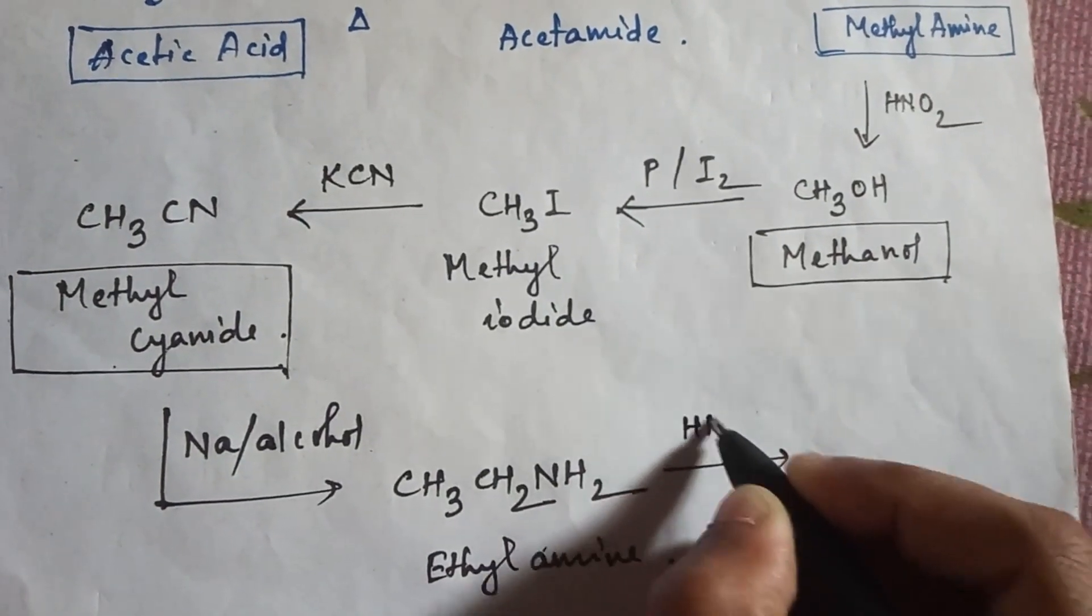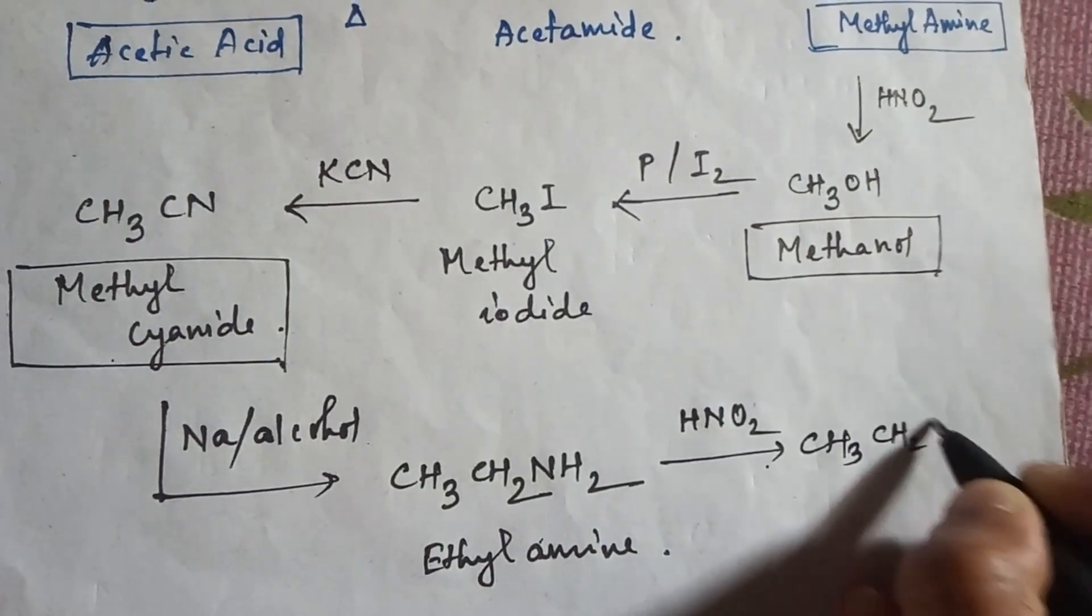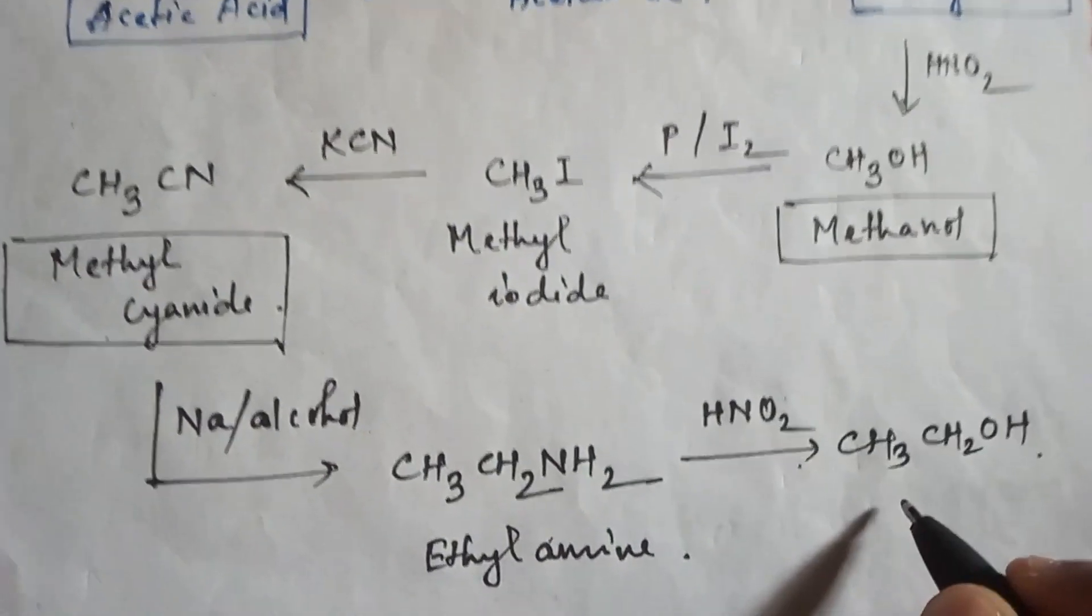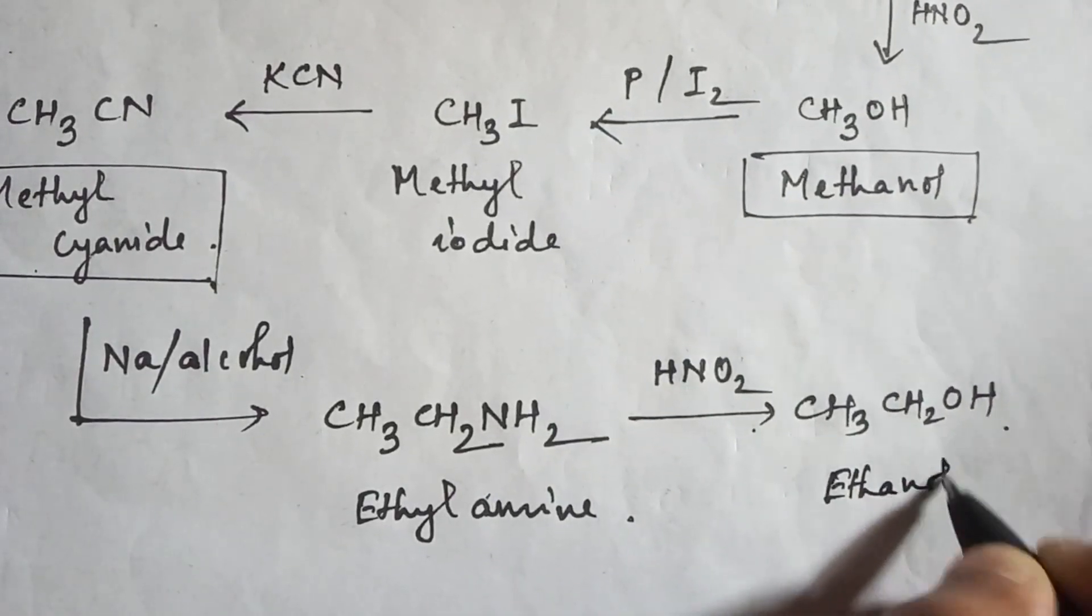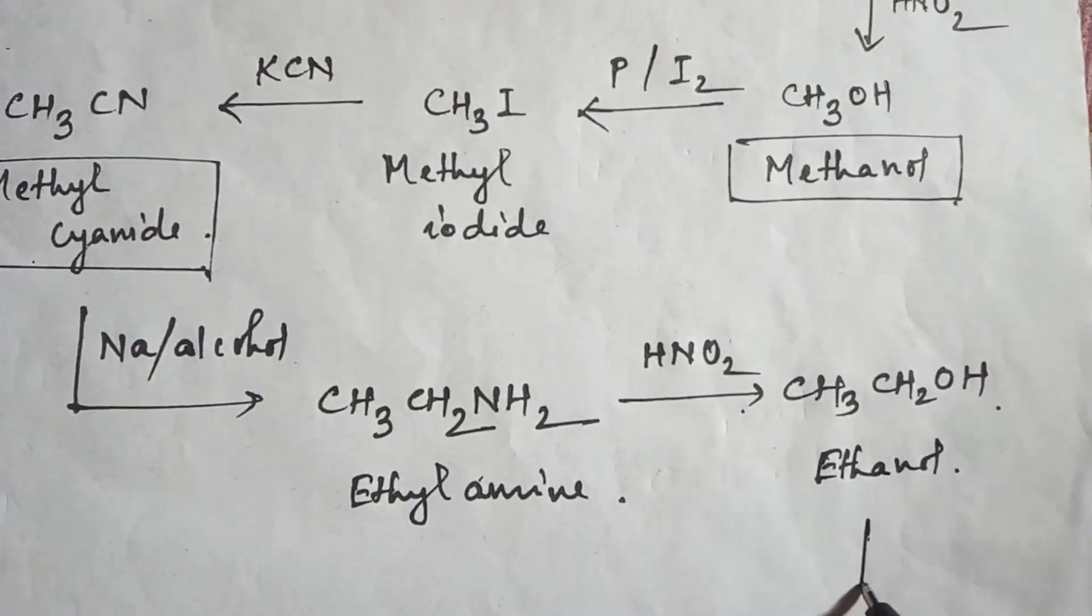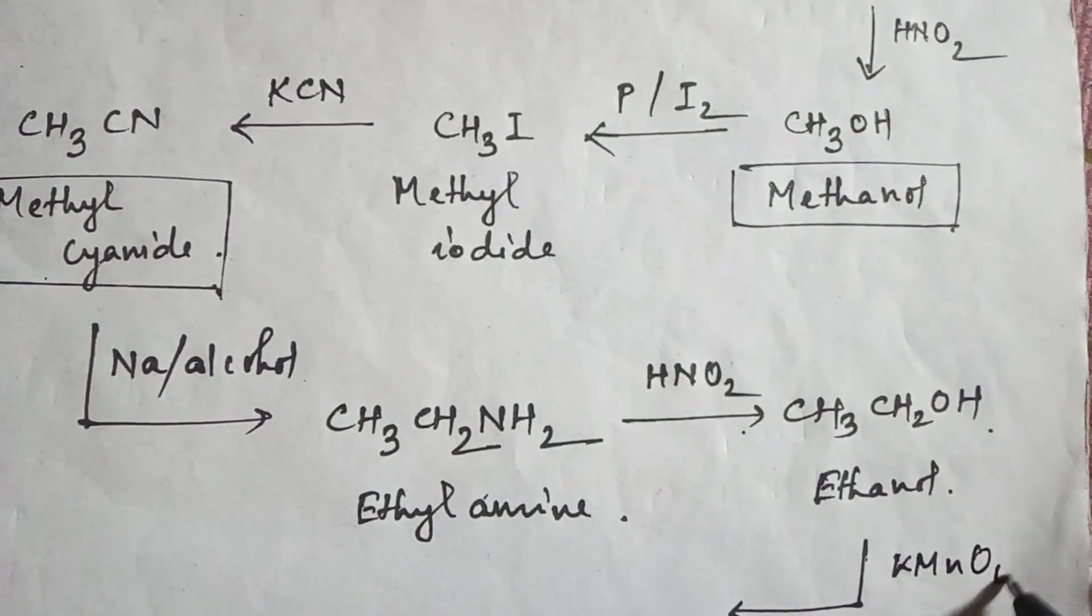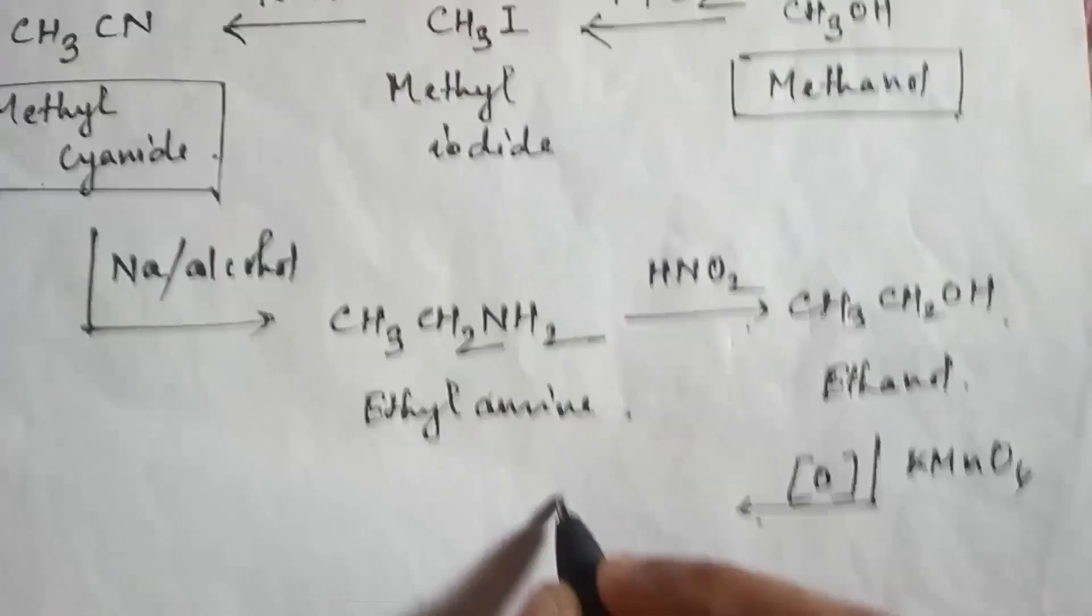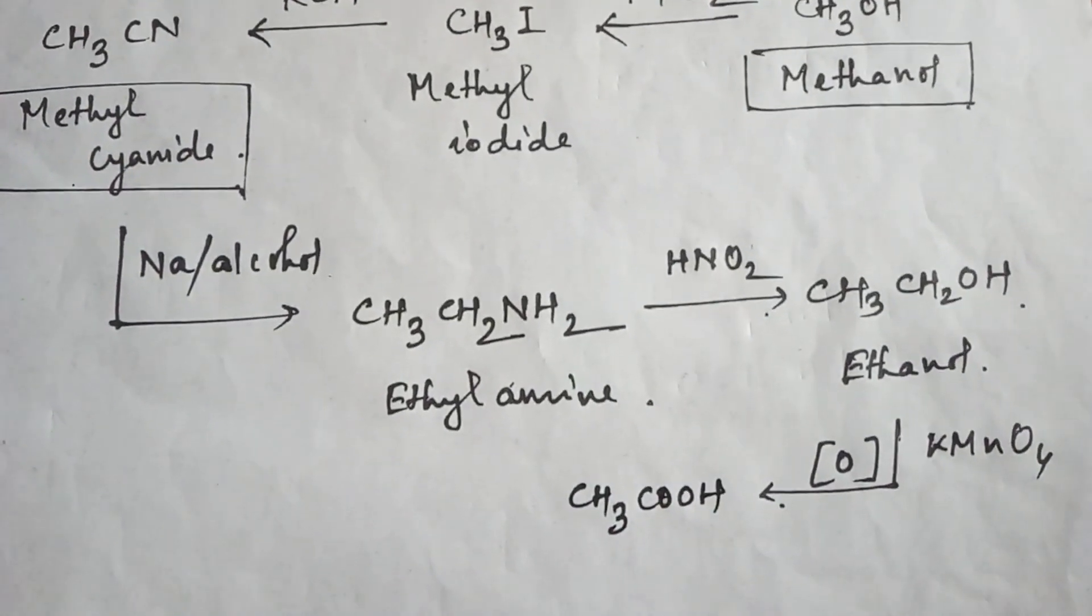Now from amine to alcohol, you just need to add nitrous acid, then you will get here ethanol. Now from ethanol to acetic acid, just do oxidation and you will get acetic acid.